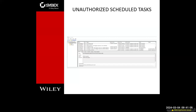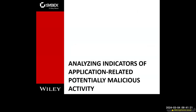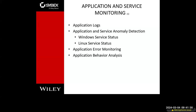We can also monitor unauthorized scheduled tasks and tighten down the tasks being used with our scheduling manager to make sure nothing is unauthorized. Looking at application-related activity that could potentially be malicious, we're going to monitor services, application logs, and service anomaly detection. This can be done in both Windows and Linux through Windows service status and Linux service status, respectively. Application error monitoring — if the application is created robustly and can track error monitoring within itself, you should use it.